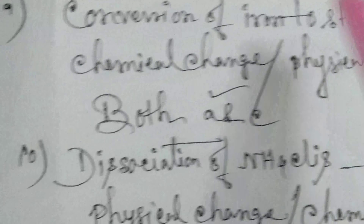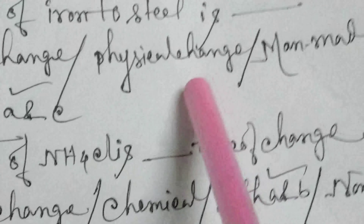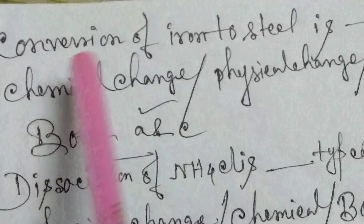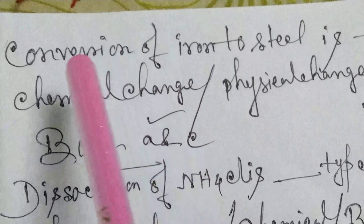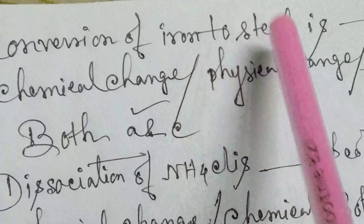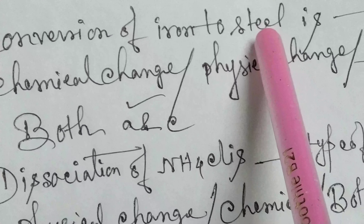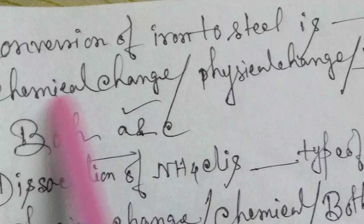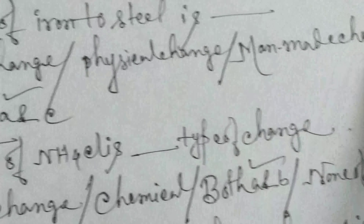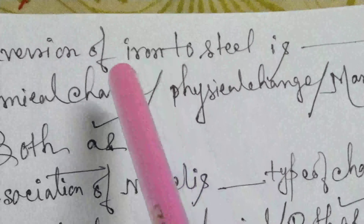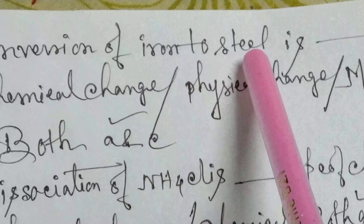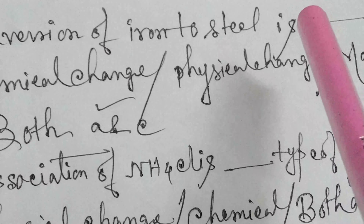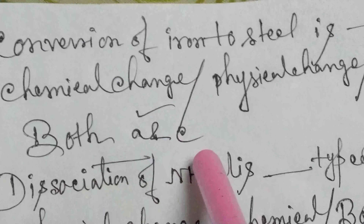Conversion of iron to steel is: chemical change, physical change, man-made change, or both A and C. The answer is both A and C — chemical change as well as man-made change. Because iron is transferred to steel, meaning an alloy is produced, making it a chemical change. And this conversion is totally carried out by human beings, so it is also a man-made change.